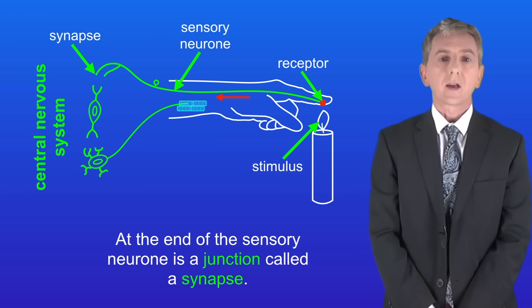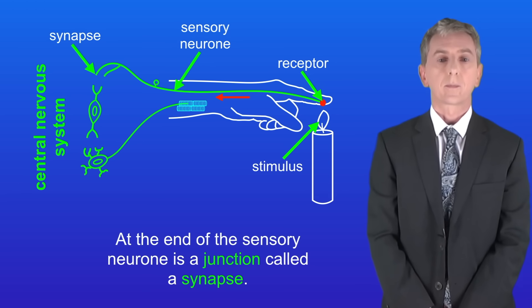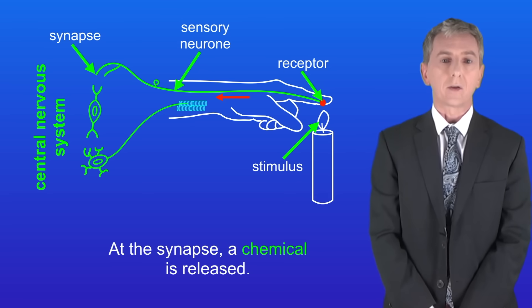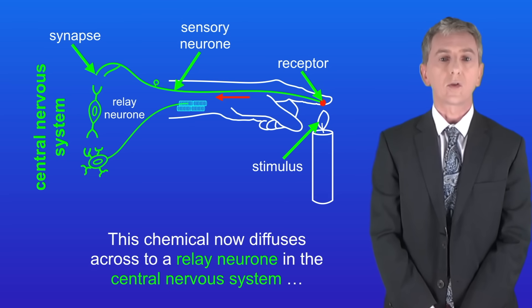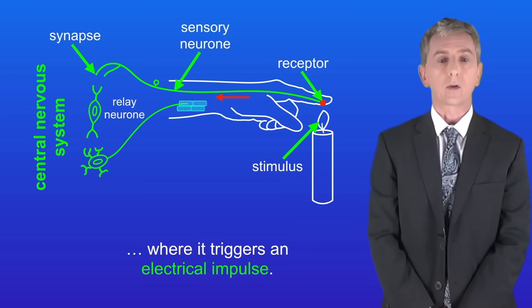At the end of the sensory neuron there's a junction called a synapse. At the synapse a chemical is released and this chemical now diffuses across to a relay neuron in the central nervous system where it triggers an electrical impulse.